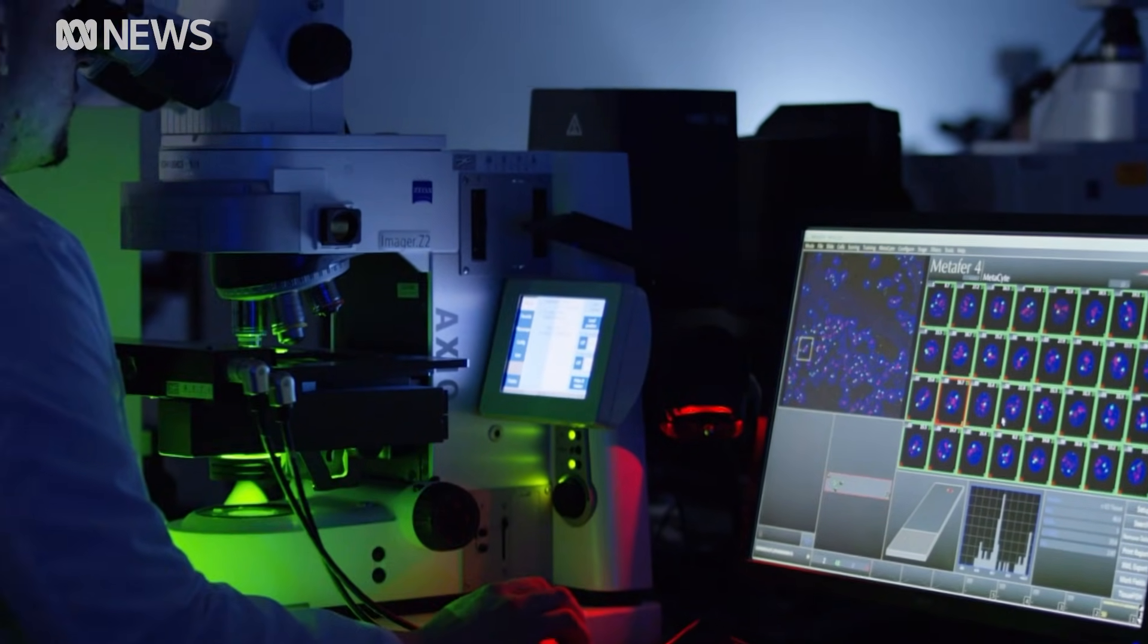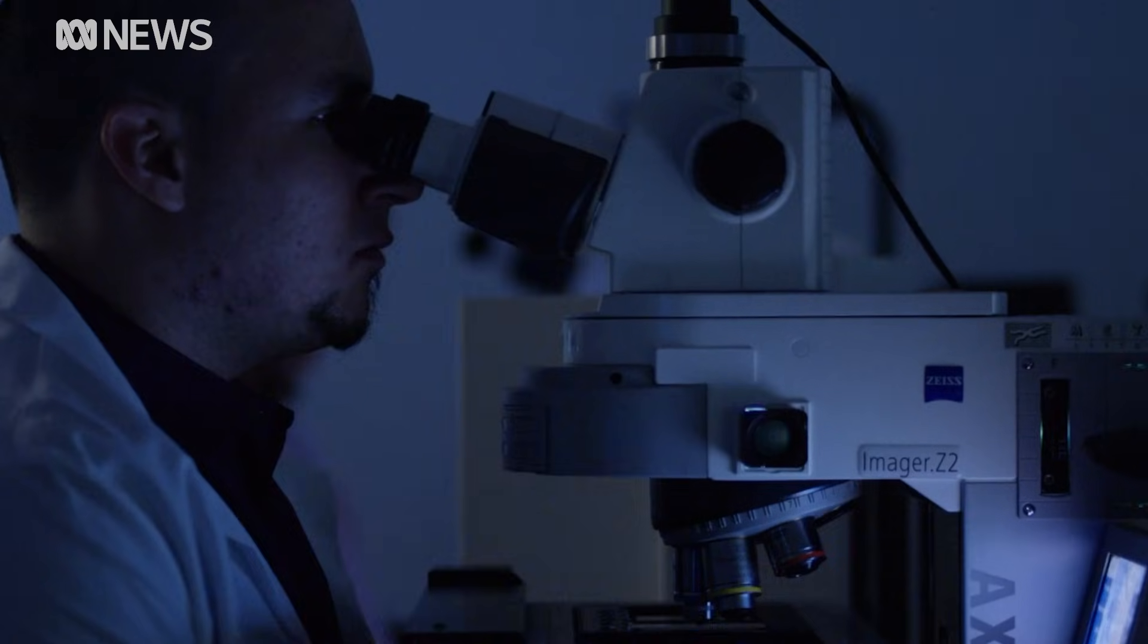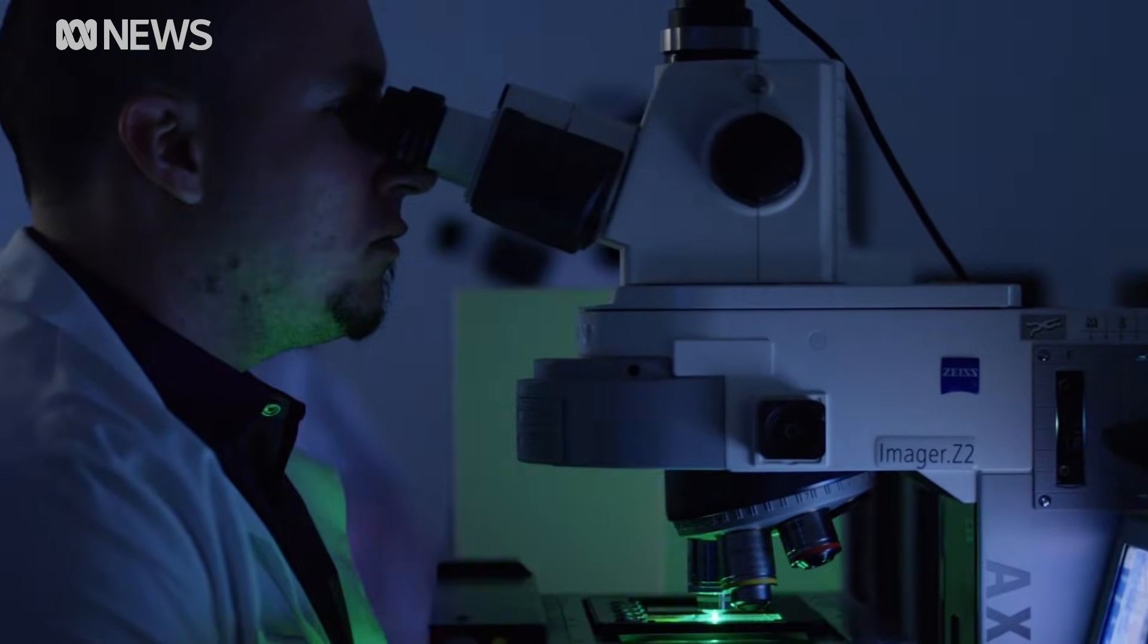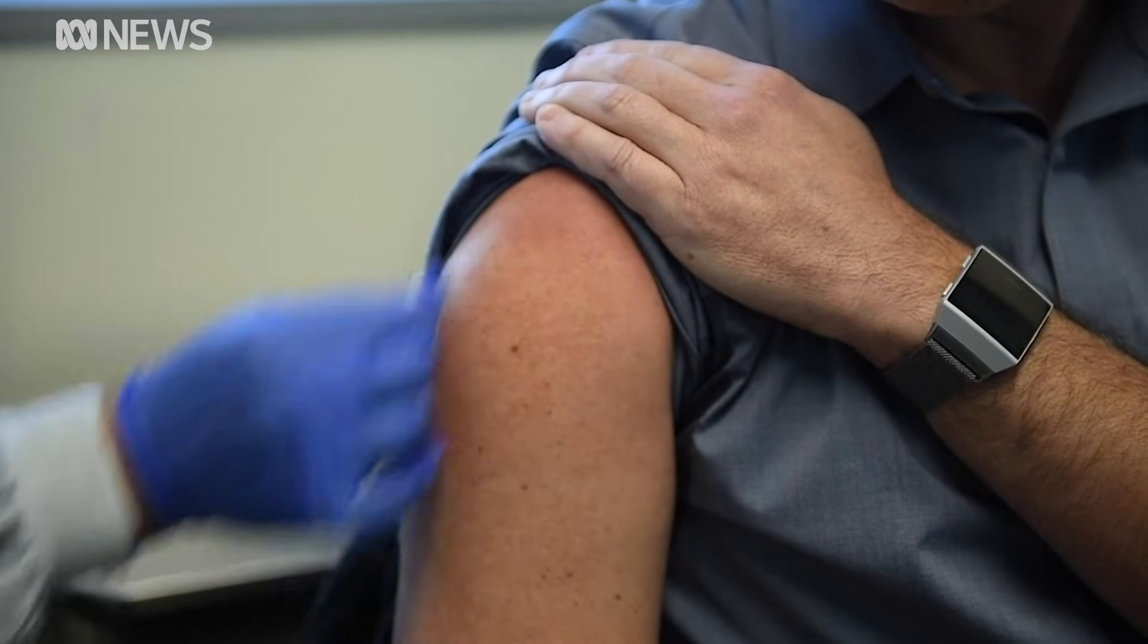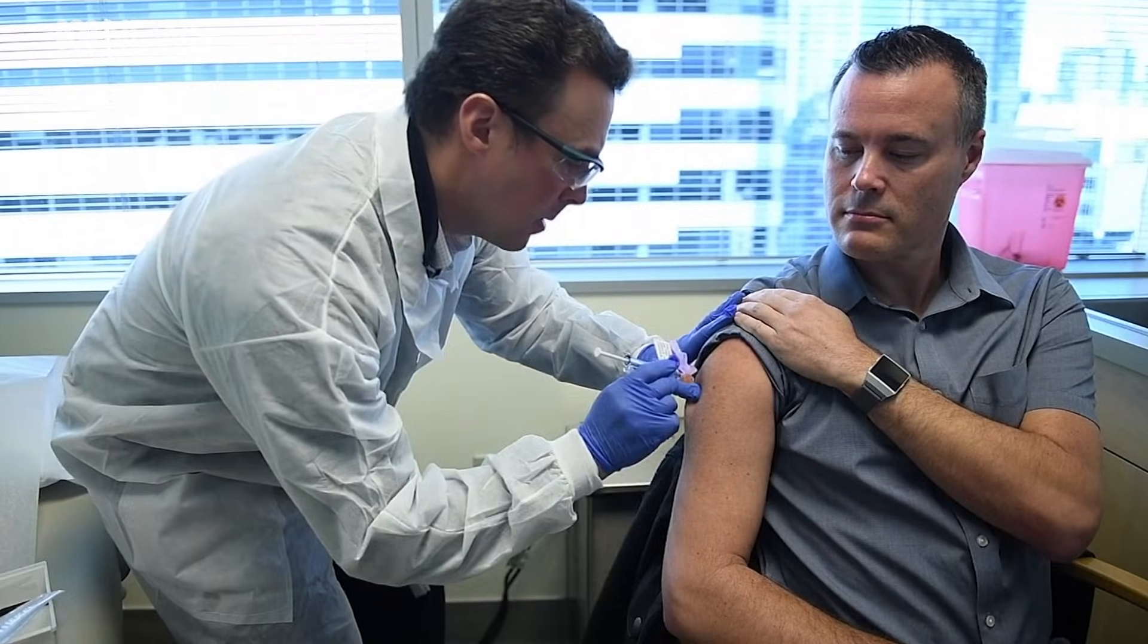A trial that began in Seattle is injecting people with that protein. Because it doesn't contain the viral RNA, they believe it's harmless. But it can teach the body how to make antibodies against the protein spikes.